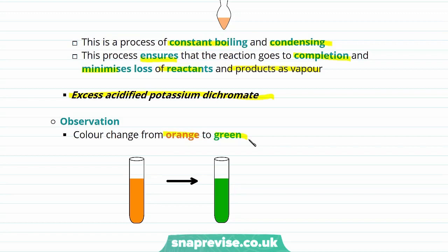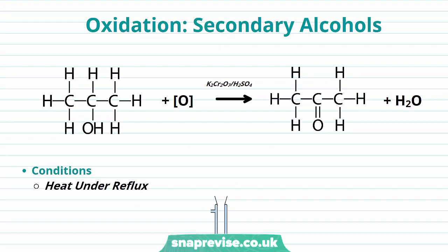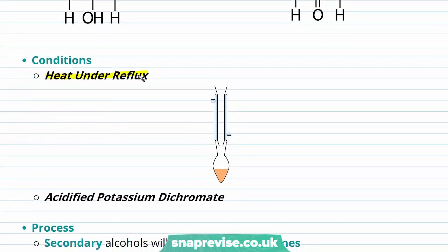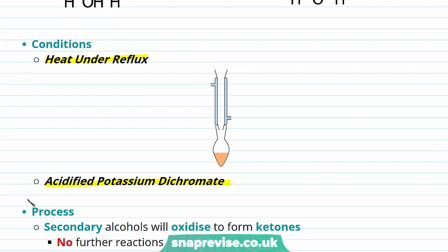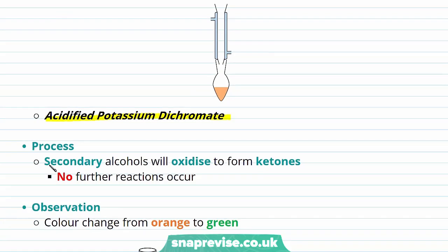So let's have a look at the oxidation of our secondary alcohols. We know our secondary alcohols can also be oxidized. Here we have propan-2-ol — you can see this hydroxyl functional group is bonded to a carbon which is bonded to two alkyl groups. When our secondary alcohols are oxidized, we form ketones, and you may recognize the ketone functional group. The conditions required to oxidize our secondary alcohol are relatively similar to those required for our primary: we heat under reflux to ensure the reaction goes to completion, and our oxidizing agent is again acidified potassium dichromate. Unlike our primary alcohols, when our secondary alcohols are oxidized they form only ketones and no further reactions occur.